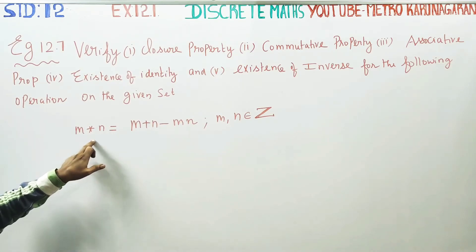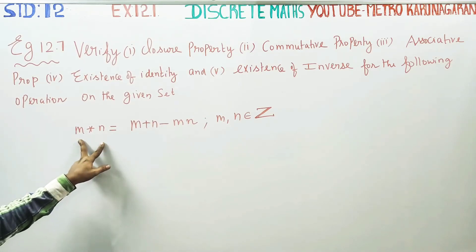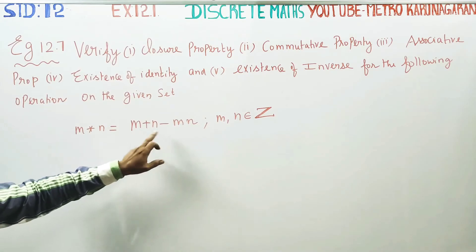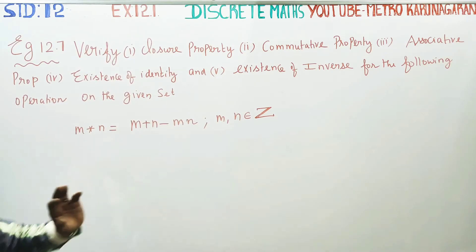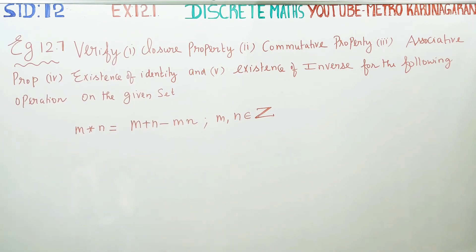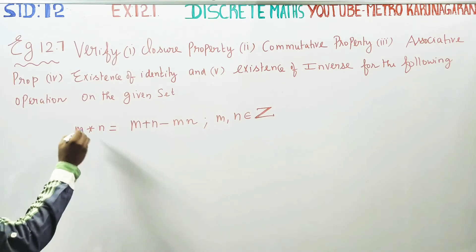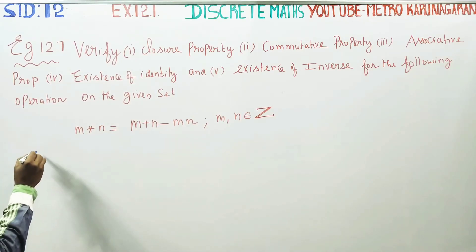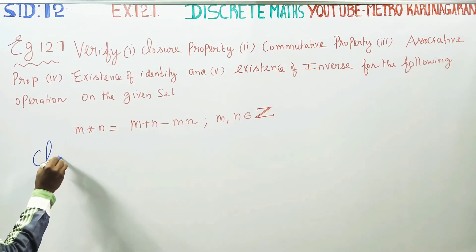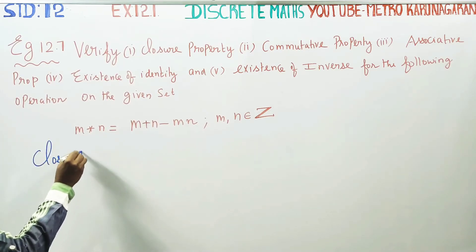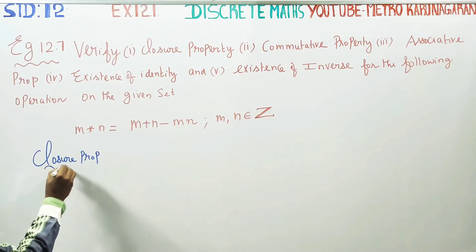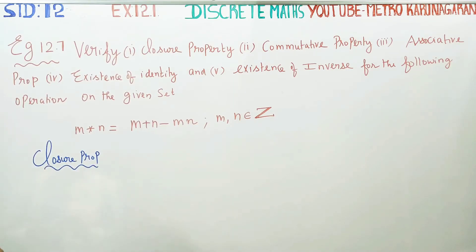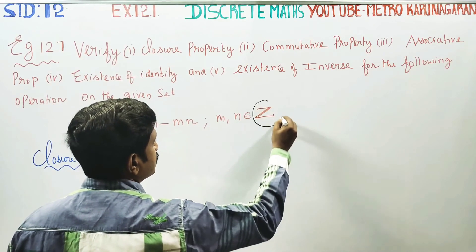For this binary operation, we take two integers, multiply them, add them, then subtract the product from the sum. That is why integers are our set. So we will work with integers throughout this problem.